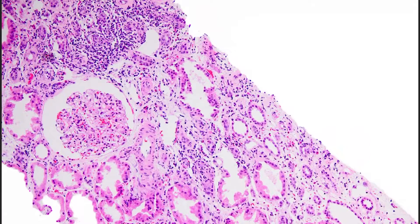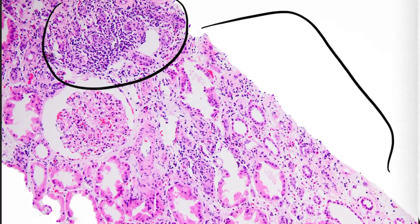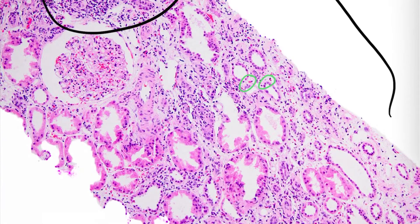Moving on to the next image, if we focus on the interstitial infiltrate, we can see that it is predominantly lymphoplasmocytic. However, there are occasional eosinophils scattered around, although it was not considered a significant component of the interstitial infiltrate.